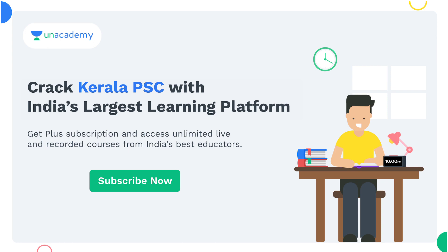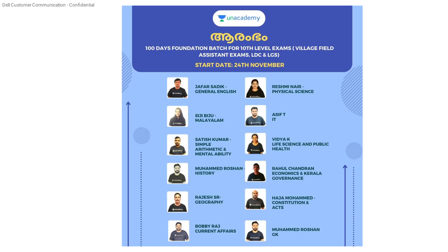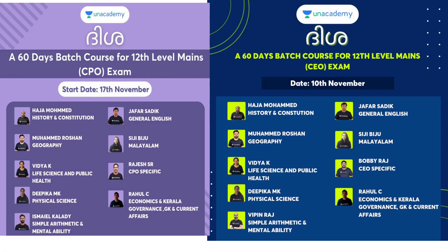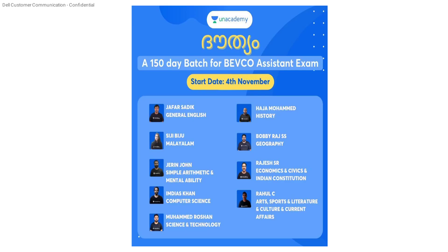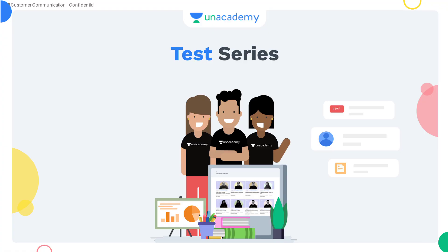We are going to discuss the details of the non-technical batch course. 75-day batch course for High Court Assistant Paper 1 — 25th November started the batch. 24th November started the RMB running. 60-day batch course for 12th level mains — 17th November started the batch, 10th November started the running. 4th November started the 150-day batch course for Vivoca Assistant Exam, LD Typist, Research Officer and related exams. Batches are running. Test series on down.